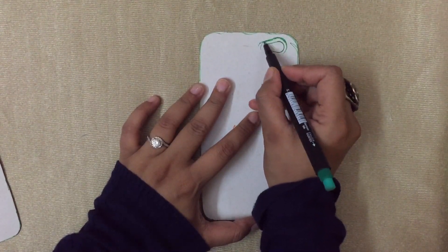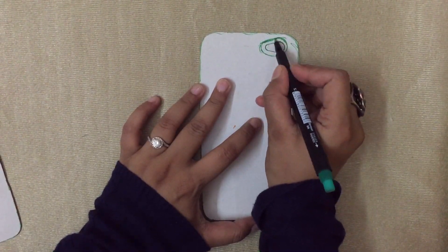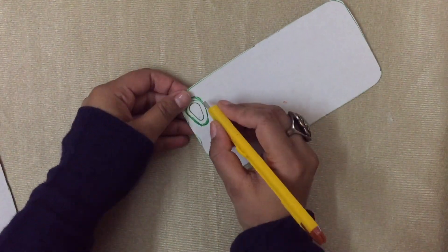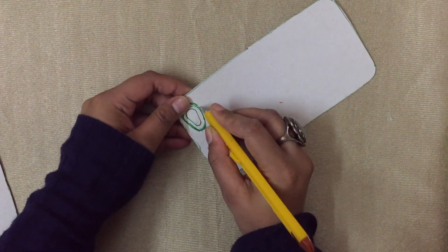Next, trace out a slightly bigger outline than the actual camera slot like so. Now cut it out with a scissor or a craft knife.